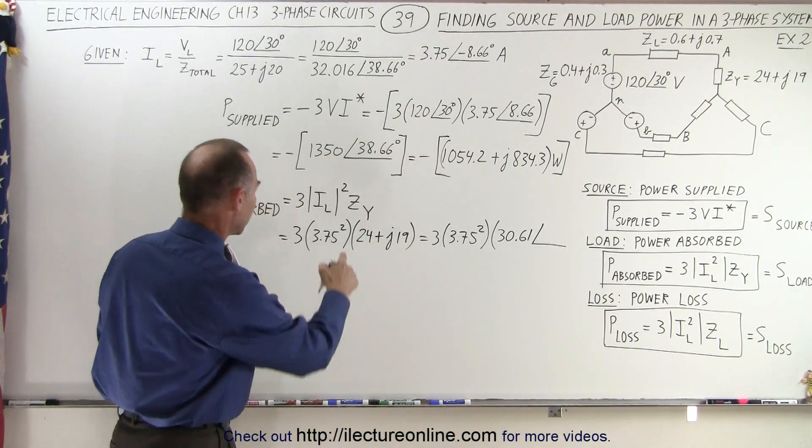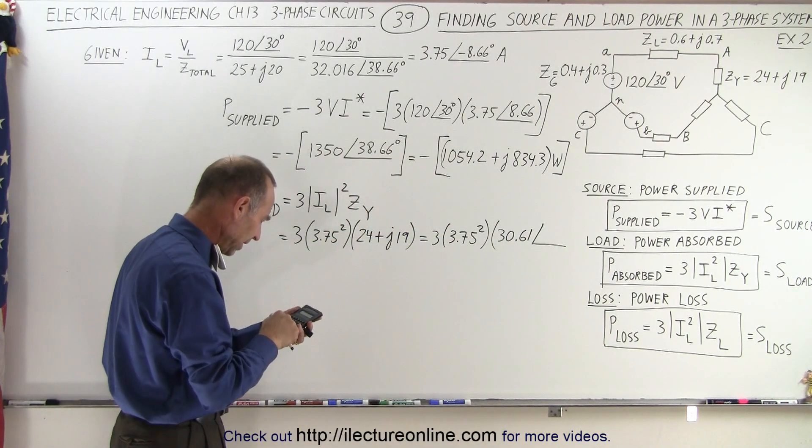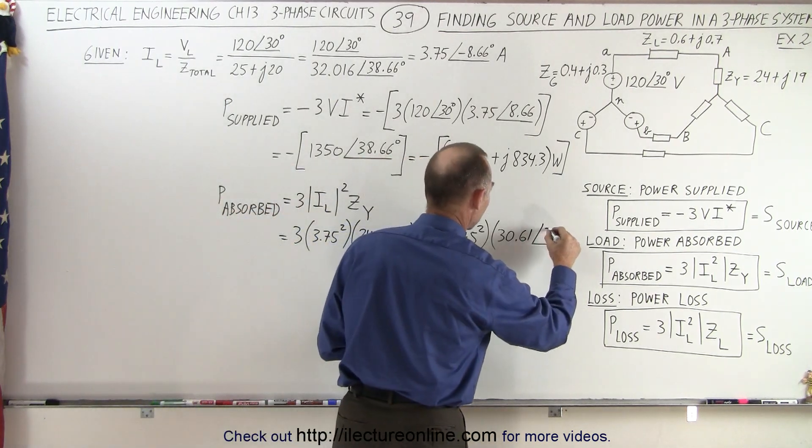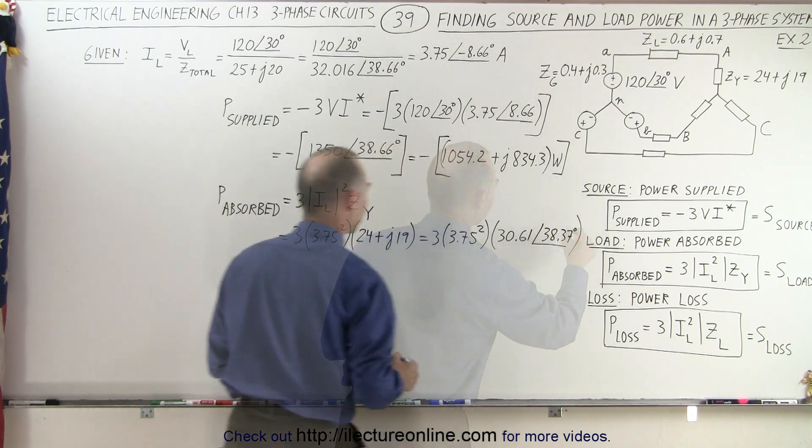With a phase angle of, let's see here, that would be 19 divided by 24. Take the inverse tangent of that, which is 38.37 degrees.